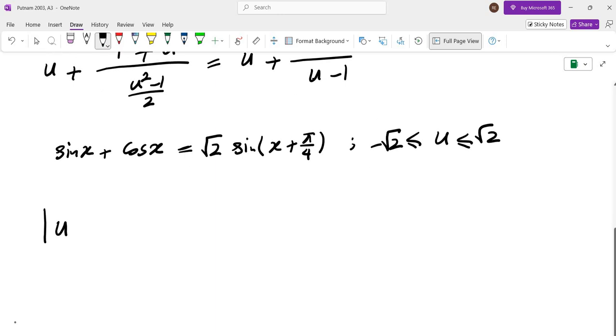So let's look at the absolute value of u plus two over u minus one. Now if you look at u minus one, u minus one would be between negative root two minus one and root two minus one.